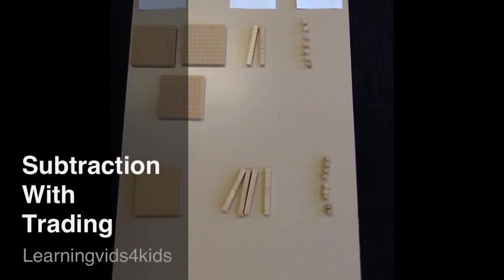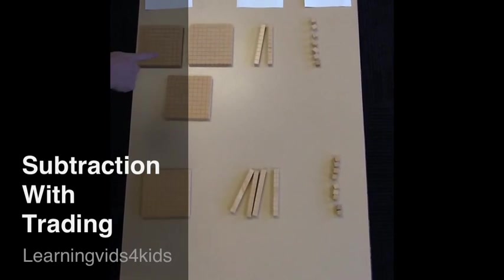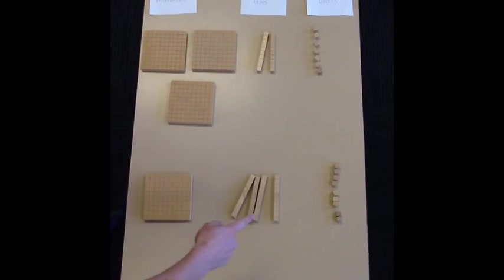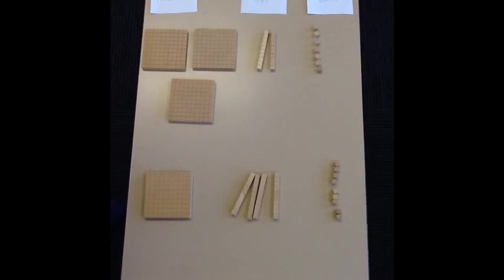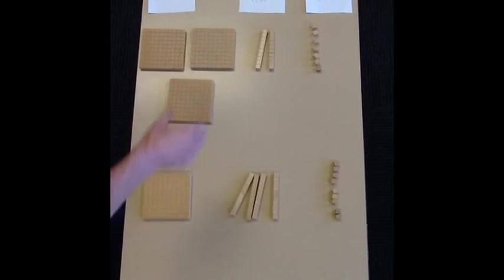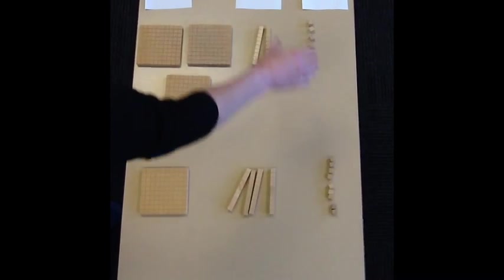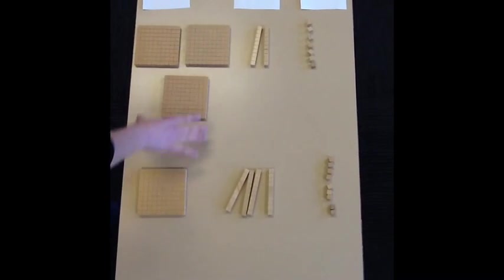We're having a look at subtraction with trading. So I've got the question 327, and we're going to take away 149. You can see that the number is split into its place value. So we've got our units here, followed by our tens, and followed by our hundreds.